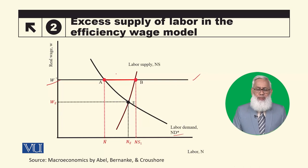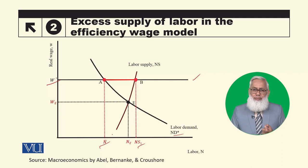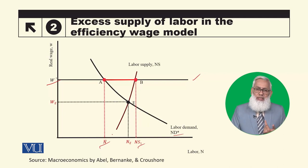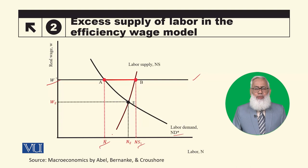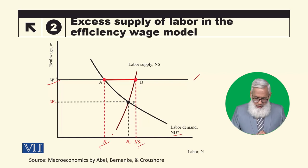At the efficiency wage, Ns1 is the amount of labor supplied, but firms hire up to the point where the labor demand curve intersects the efficiency wage line. This gives actual employment, while full employment corresponds to the classical assumption that prices and wages fully adjust.